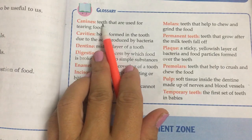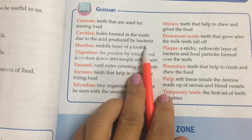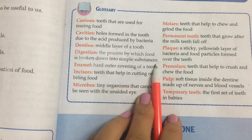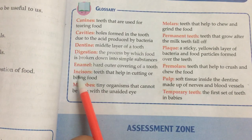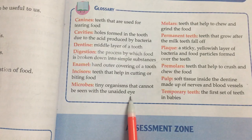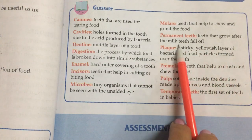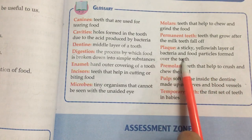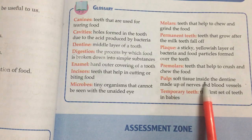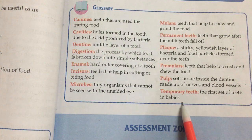Glossary: Canines — teeth that are used for tearing food. Cavities — holes formed in the tooth due to the acid produced by bacteria. Dentine — middle layer of a tooth. Digestion — process by which food is broken down into simple substances. Enamel — hard outer covering of a tooth. Incisors — teeth that help in cutting or biting food. Microbes — tiny organisms that cannot be seen with the unaided eye. Molars — teeth that help to chew and grind the food. Permanent teeth — teeth that grow after the milk teeth fall off. Plaque — a sticky yellowish layer of bacteria and food particles formed over the teeth. Premolars — teeth that help to crush and chew the food. Pulp — soft tissue inside the dentine made up of nerves and blood vessels. Temporary teeth — the first set of teeth in babies.